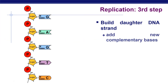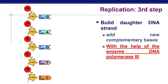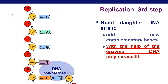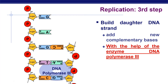The third step builds the daughter DNA strand by adding new complementary bases with the help of DNA polymerase III. DNA polymerase III attaches to the parent strand, causing new complementary bases to attach to the parent bases — cytosine pairs with guanine, thymine pairs with adenine, guanine pairs with cytosine, and adenine pairs with thymine. You can remember these base pairings as A-T and C-G.